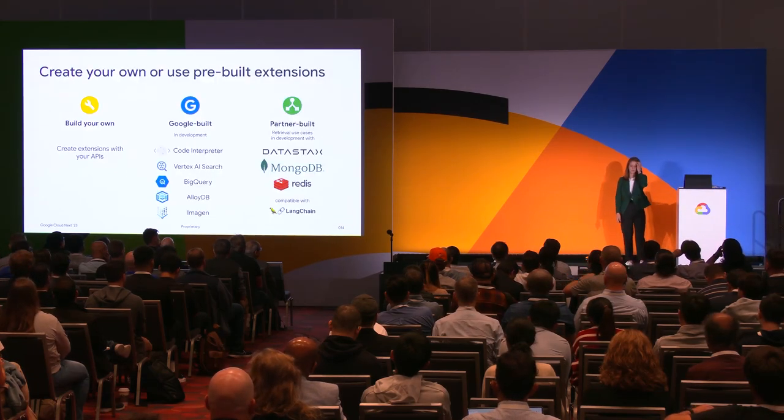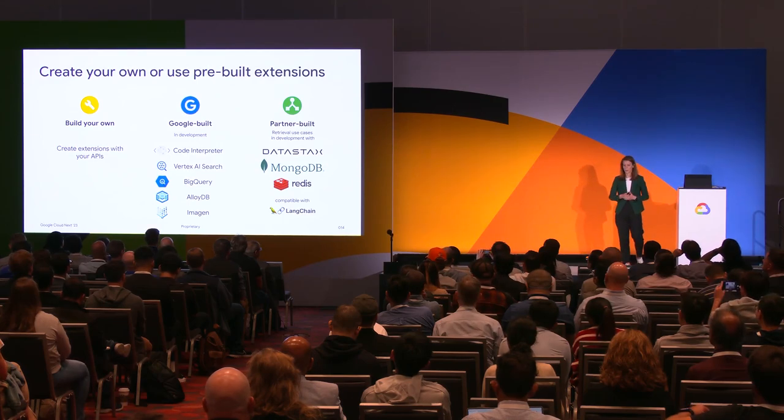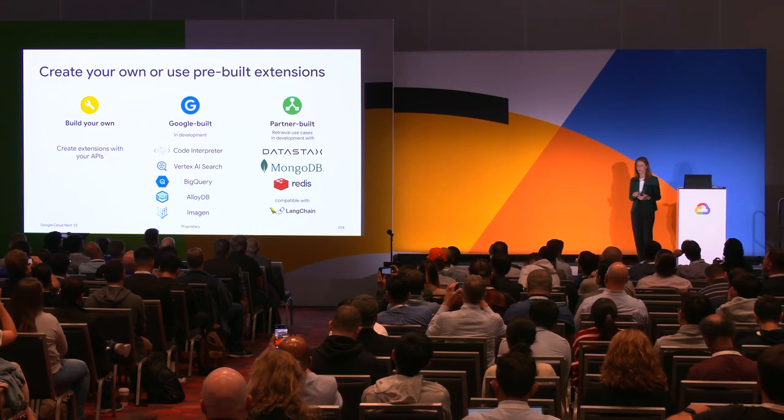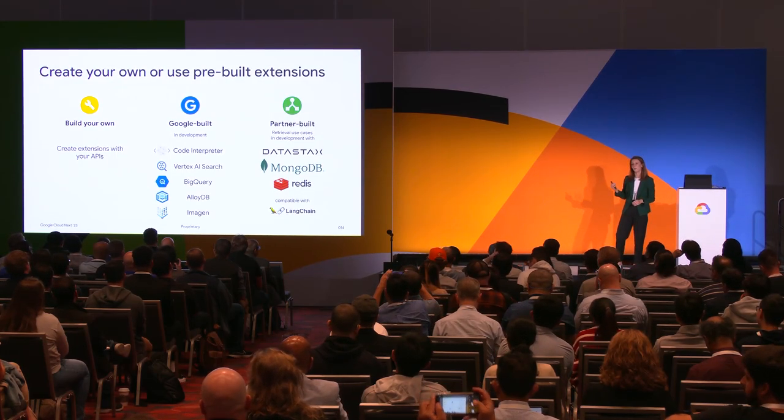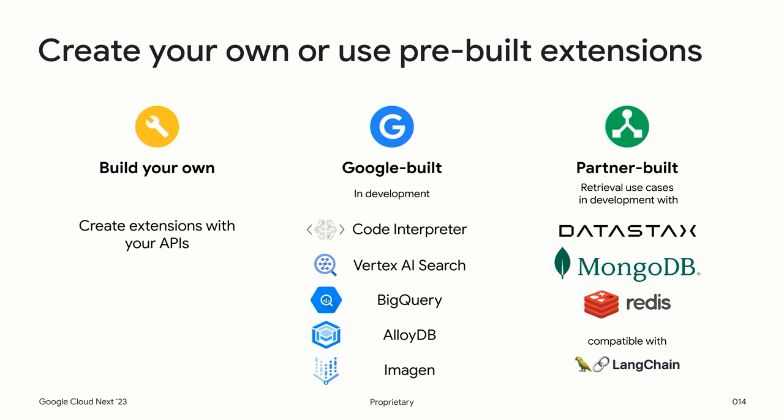Thanks, Mark. I'm super excited to show more about how you can use these various tools to not just create different extensions, but also to browse and use extensions. With the platform, you can build your own extensions using your APIs, as Mark just described. You could also use pre-built Google extensions for popular Google Cloud services like BigQuery, AlloyDB, Vertex AI Search, and Code Interpreter. You could also use partner extensions for tasks such as data retrieval with Datastax, MongoDB, and Redis, or deploy your Langchain code through Vertex AI Extensions. In the gallery, you can browse, discover, and test these different extensions, enabling developers to get started quickly.